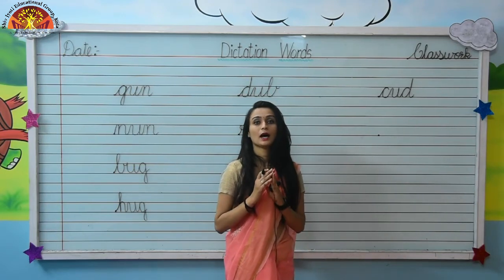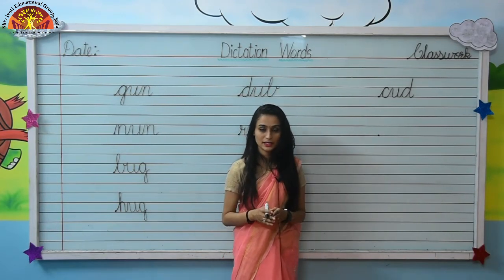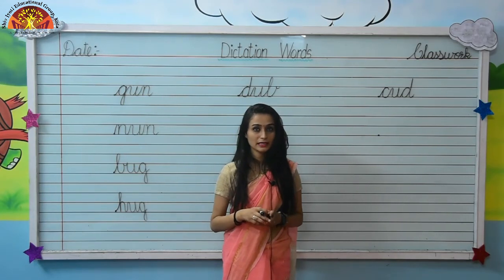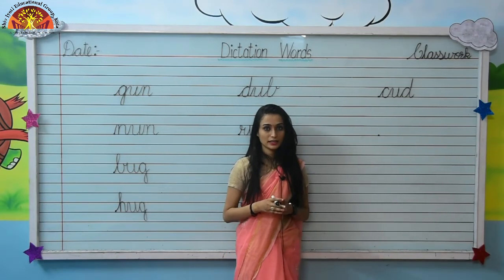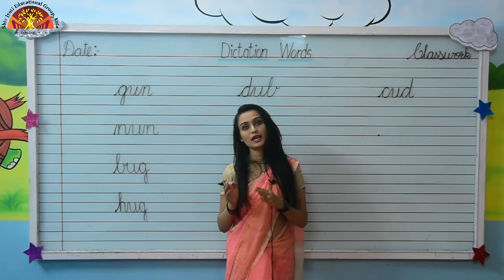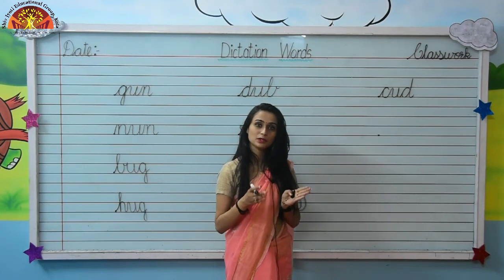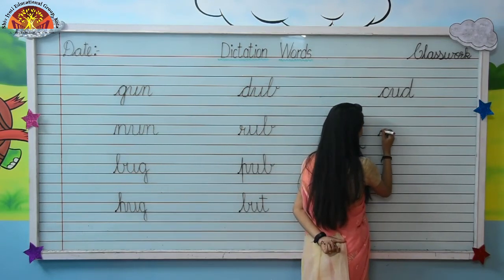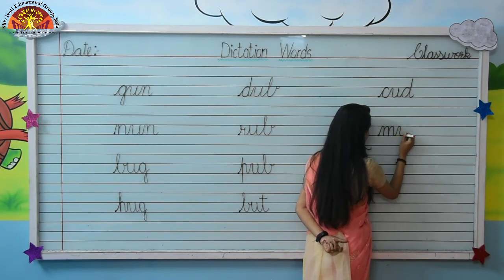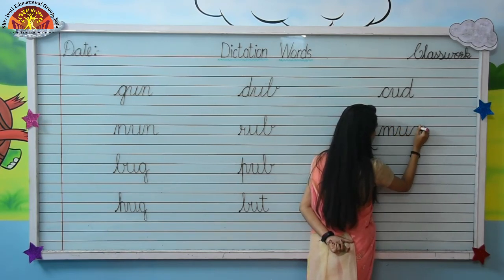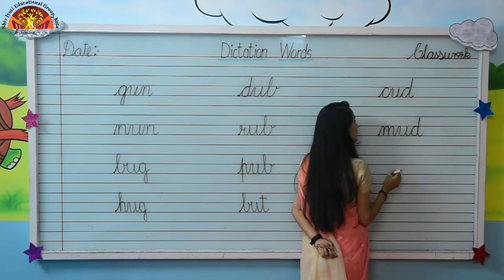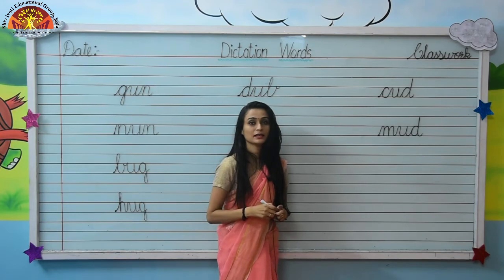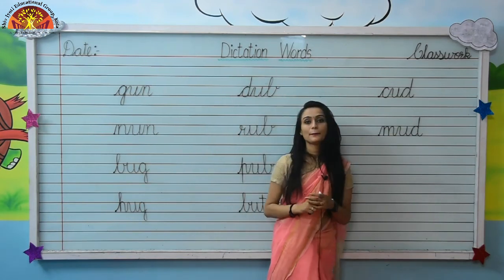Your last word is mud. Spelling of mud is M-U-D, mud. So let's write down the spelling of mud: M-U-D, mud.